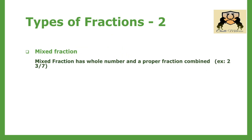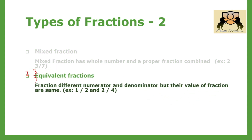Mixed fractions: a fraction which has a whole number and a proper fraction combined is called a mixed fraction. For example, 2 and 3 by 7 — here 2 is the whole number and 3 by 7 is the proper fraction. When a whole number and a proper fraction are combined, it is called a mixed fraction.